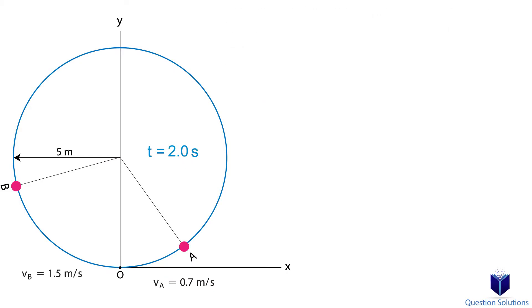Distance is speed multiplied by time, so for particle A, we have 0.7 meters per second multiplied by 2 seconds, which gives us 1.4 meters. For the second particle, we have 1.5 meters per second multiplied by 2 seconds, which gives us 3 meters.